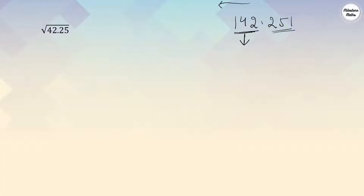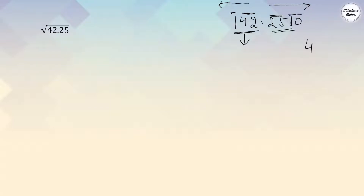For the whole number part, moving right to left, we put a bar on 2 and moving towards 4, these two numbers form one pair. For the decimal part, we move from left towards the right hand side. We put the bar on 25 first, so that comes in one bar, and this 1 is left alone. Numbers after the decimal must always be in pairs, so to make it a pair we add zero — because adding a zero after the decimal doesn't change the value. For example, 4.3 equals 4.30 or 4.300.